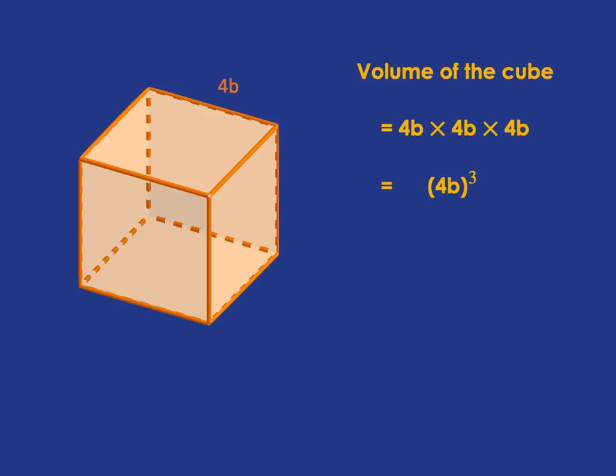which has side length of 4b, well, we know that the way to work out the volume of the cube is length times the breadth times the height. So it's going to be 4b times 4b times 4b, which we can write as 4b in brackets, all cubed.